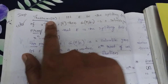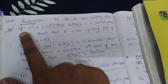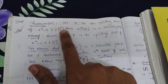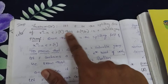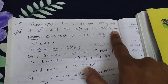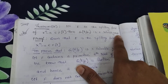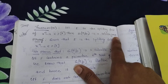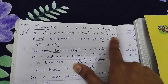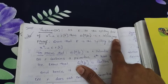This is an important theorem. Let E be a splitting field of x^n minus a, belonging to F[x]. Then show that G(E/F) is a solvable group. A solvable group has a normal series whose quotient groups are abelian. That is the definition of a solvable group.